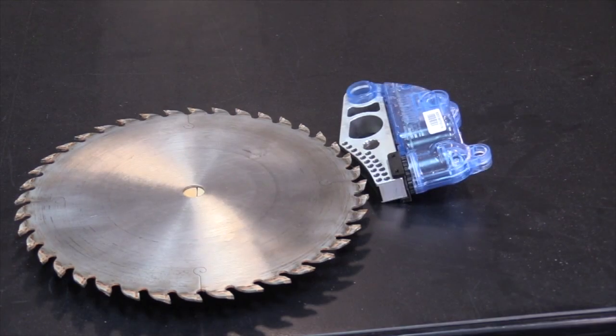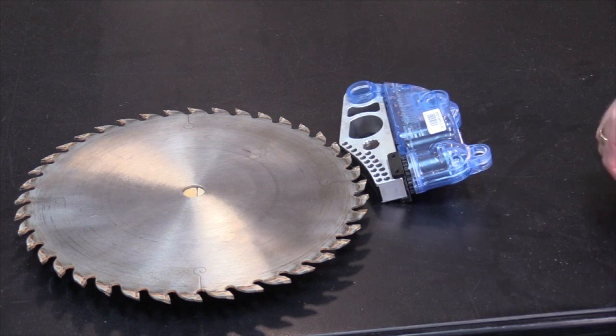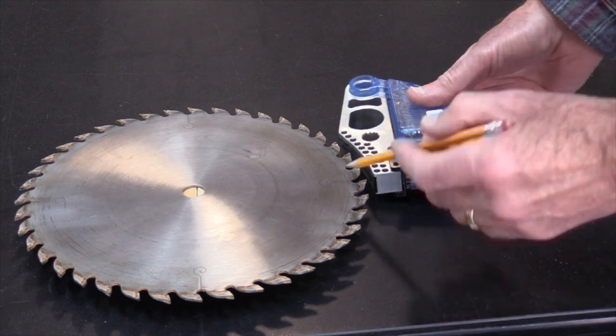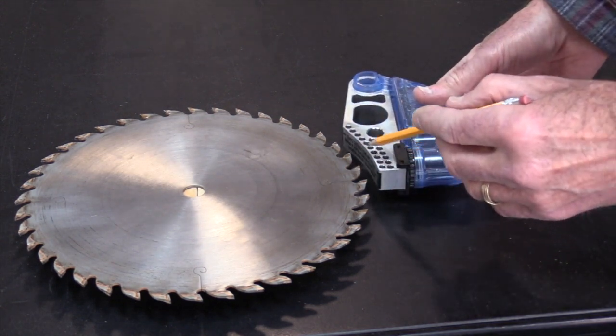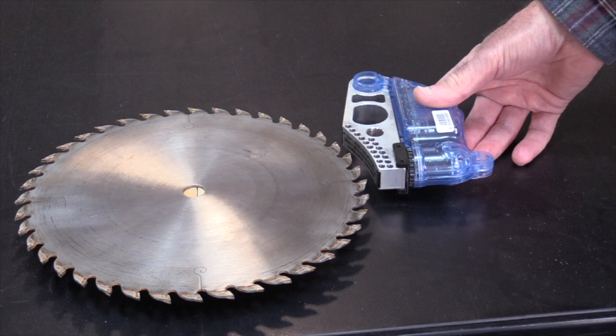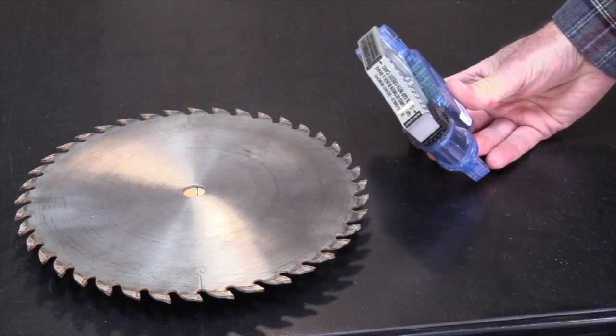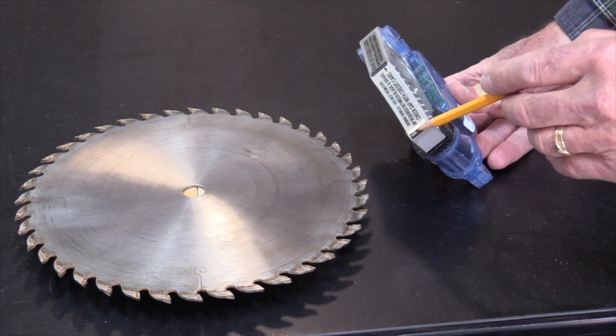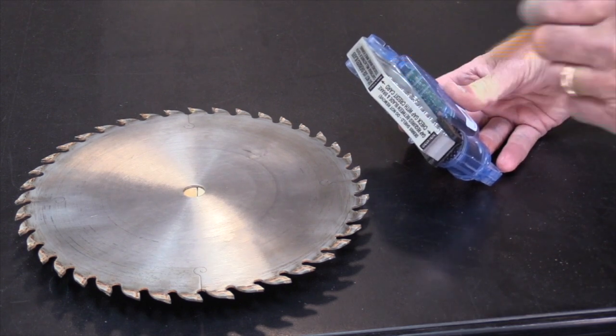Whenever a blade is changed, it's essential to check and if necessary adjust the clearance between the saw blade teeth and the surface of the brake cartridge. So what we're gonna do when we install a new blade is check the clearance between the blade teeth and the cartridge at these two points marked in black.